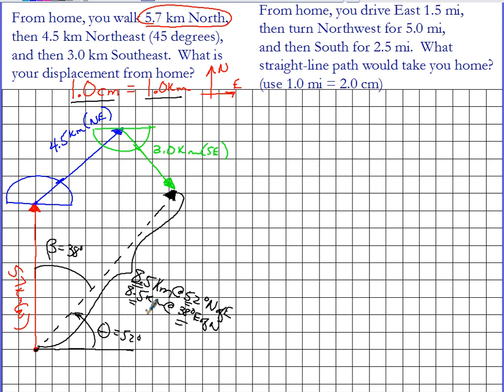Let's try this one. From home, you drive east 1.5 miles, and then turn northwest for 5 miles, and then south for 2.5 miles. What straight-line path would take you home?